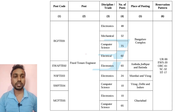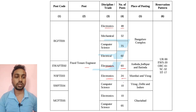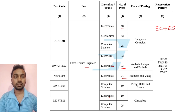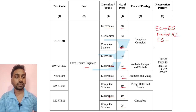For the total posts, branch-wise: Electronics has 40, 48, 3, 24, and 10 posts across units, totalling 85 posts for the EC branch. Mechanical has 52 posts. Computer Science has 75, 10, and 5 posts, totalling 90 posts for CS.